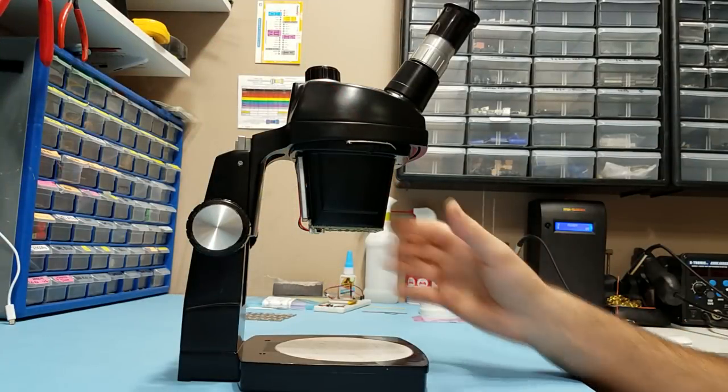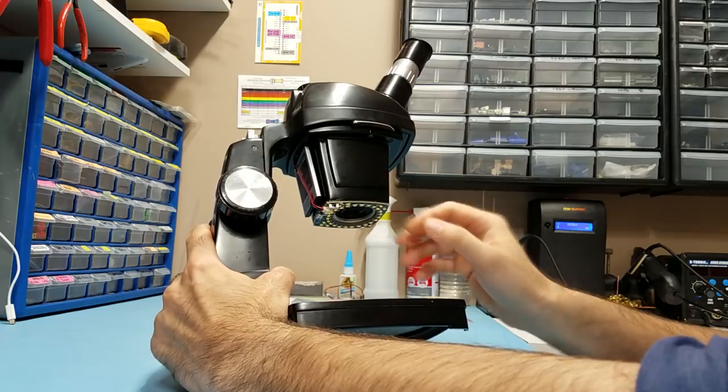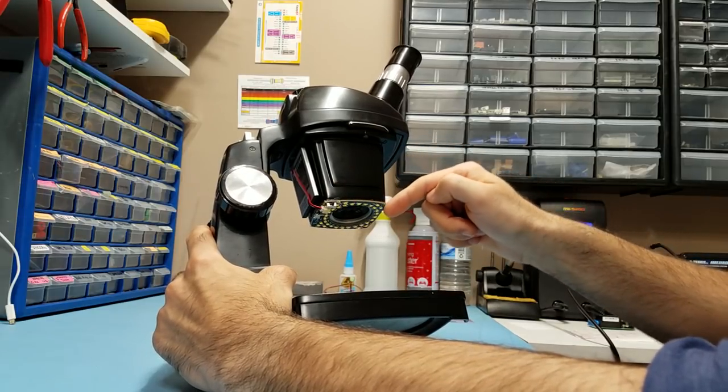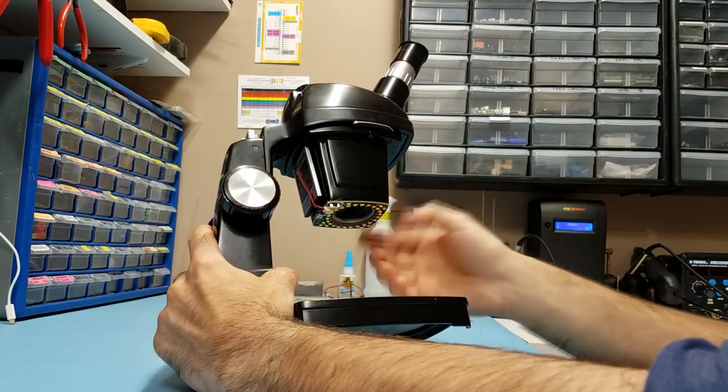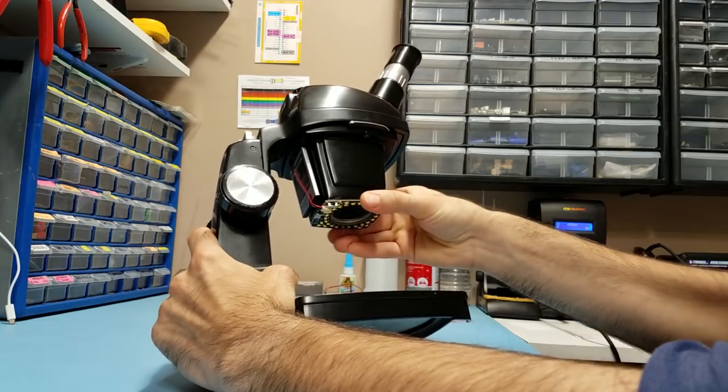Here's the finished product installed on the scope. Since there were no mounting holes on the body of this I just used a little hot glue around the perimeter of the PCB and that works well, it's more than enough to keep it very well secured.